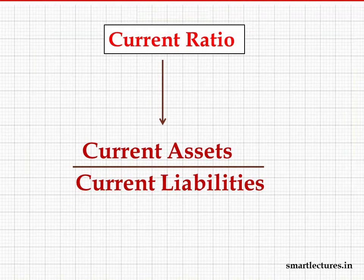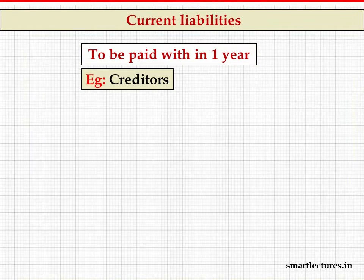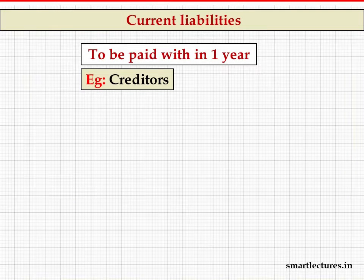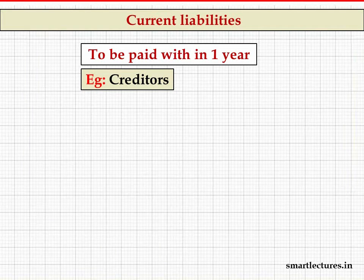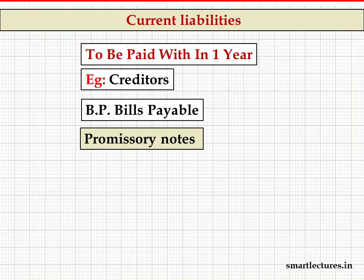Current liabilities means liabilities which are to be paid within one year. For example, creditors — the firms or persons from whom we have bought goods on credit — are expected to be paid in one, two, or three months, not five years, so creditors are always current liabilities. Bills payable, also called promissory notes, are always for a few months — one, two, or three months — not for years.